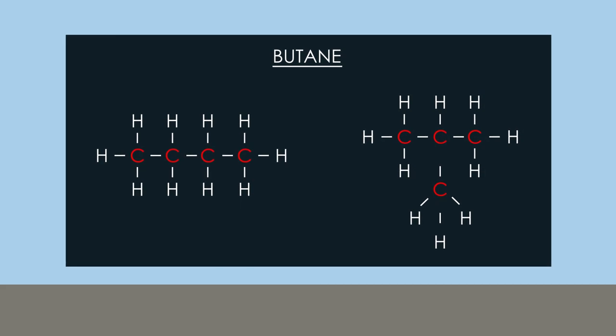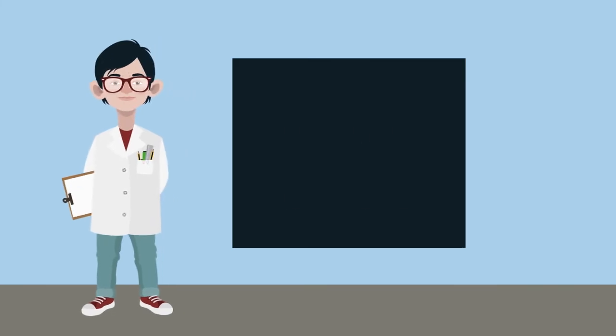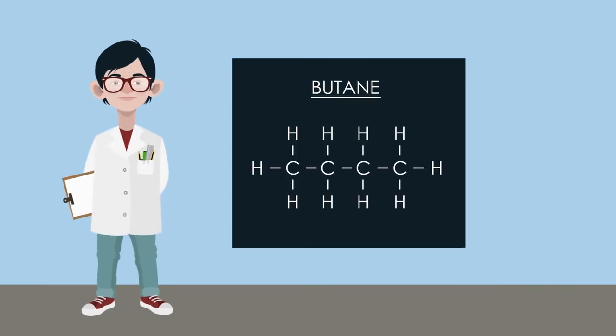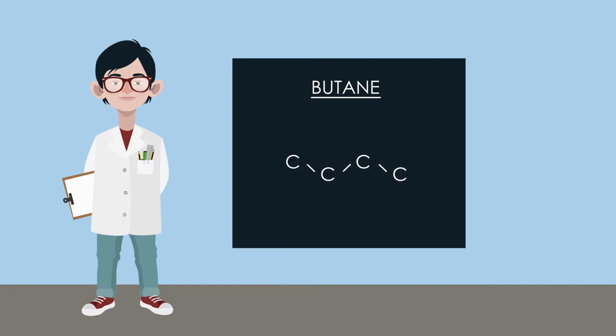To make it easier to draw the structural formula, we often omit the hydrogen atoms and just show the bonds connecting the carbon atoms, bending the chain so you can see where the carbon atoms are.